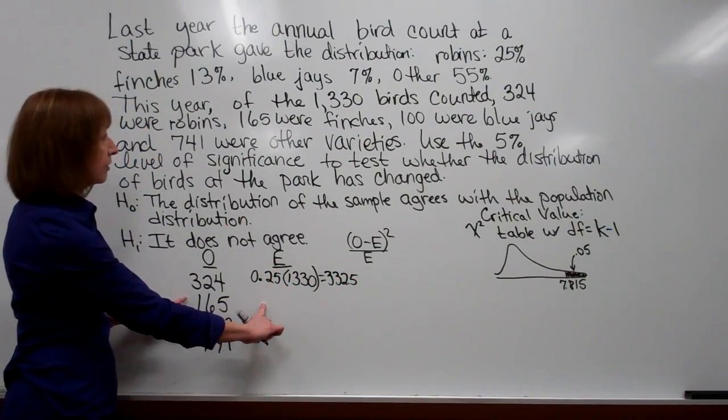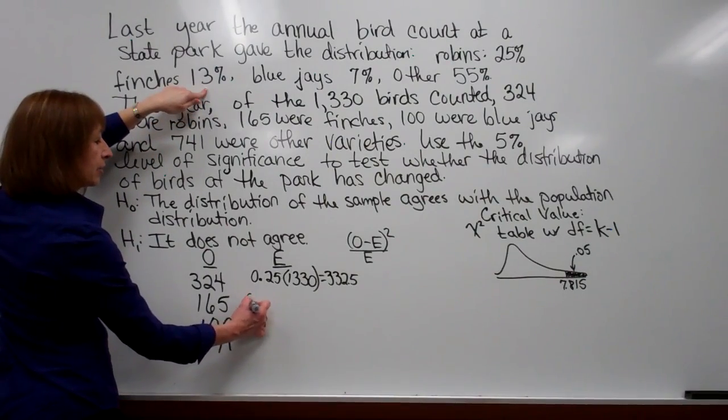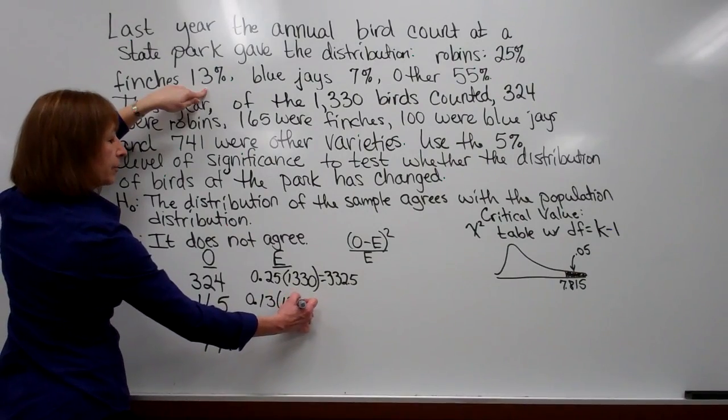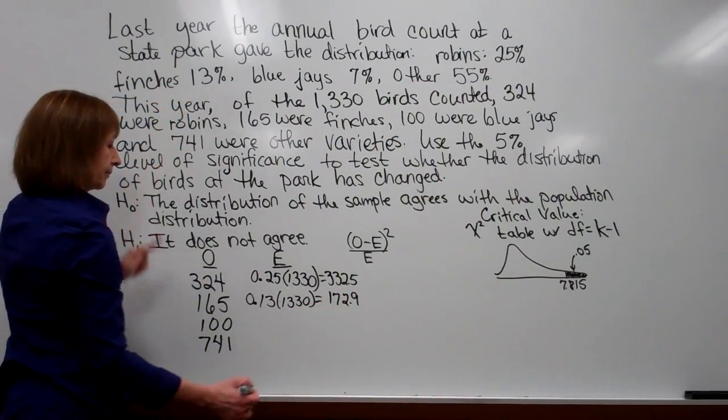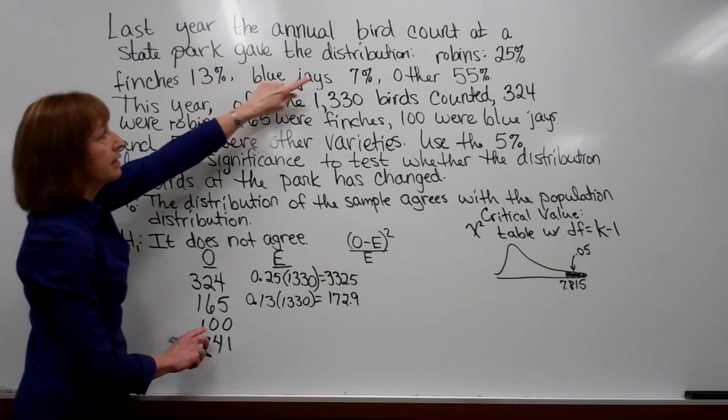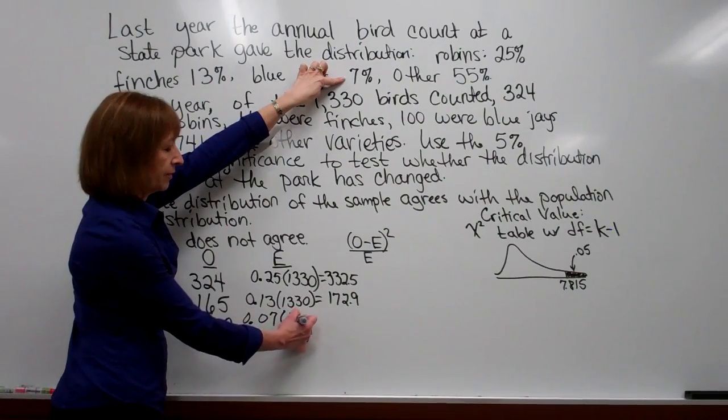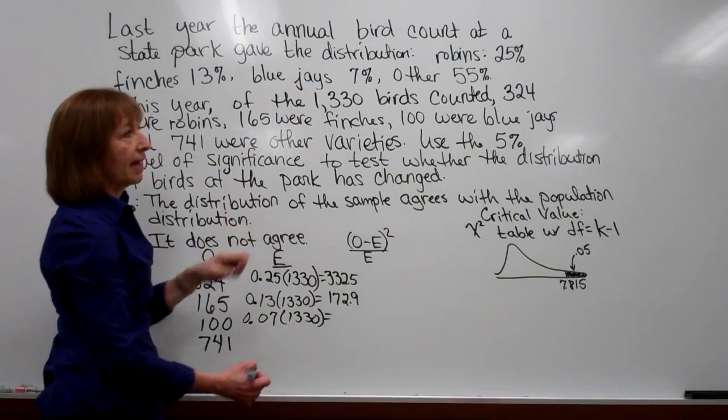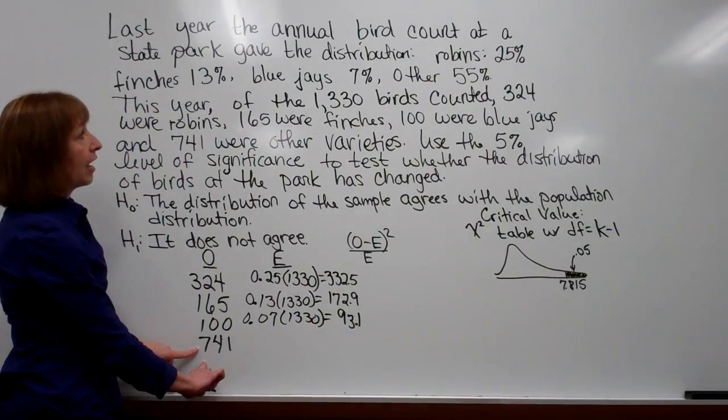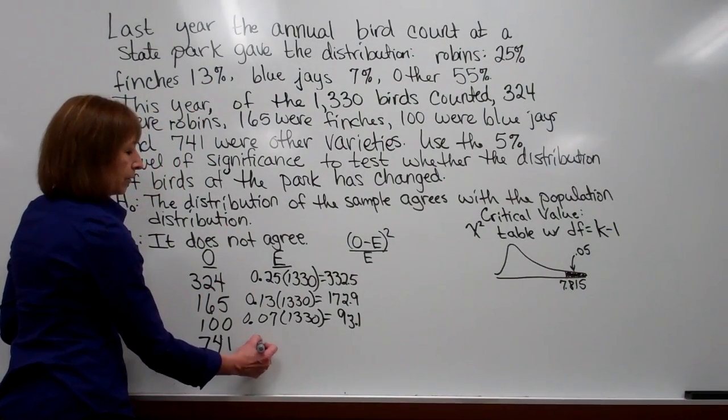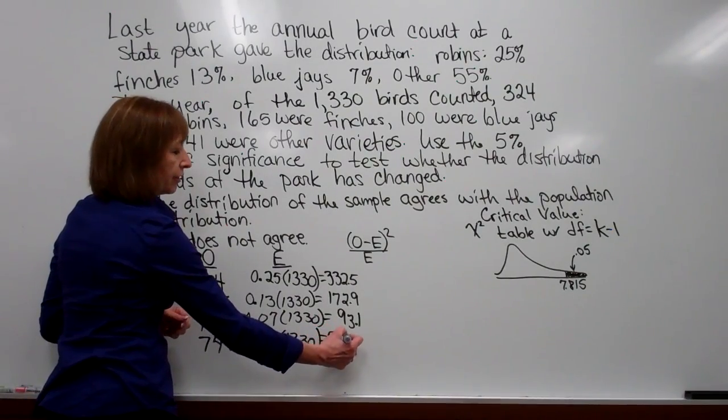Next, what did we expect for the finches? Well with the finches, 13%, so we would expect 13% of the 1330 birds to be finches, and when we do that calculation we get 172.9. Next category is the blue jays. We would expect 7% of them to be blue jays, and when we take 0.07 times the 1330 and we multiply that out we get 93.1. And then finally for the other is 55%, so when we take 0.55 times the 1330 we get 731.5.